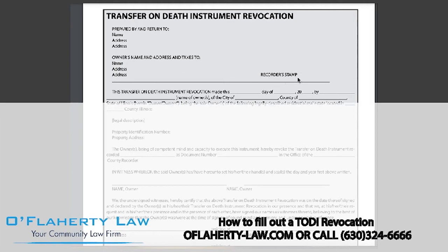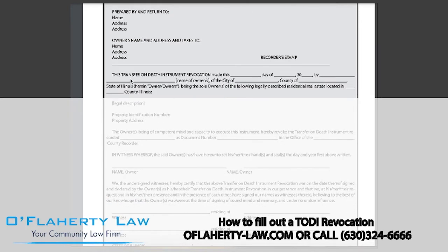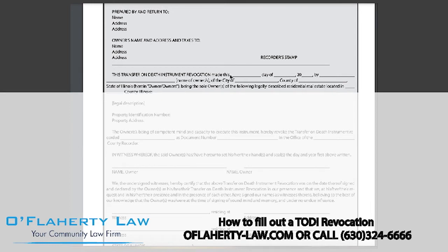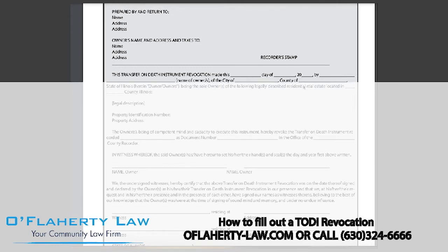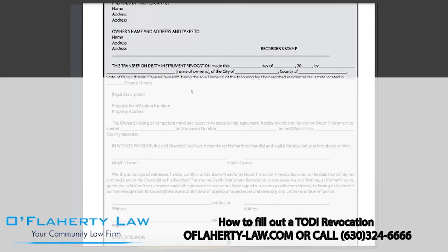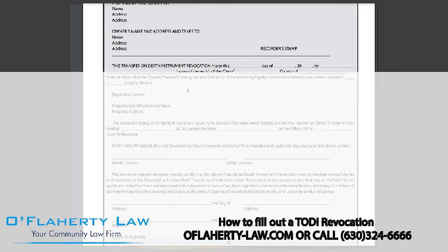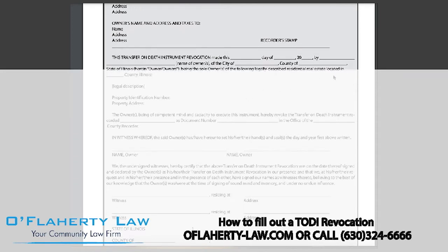The recorder will stamp here. This document will state that the transfer on death instrument revocation will be made on whatever date you are filing this revocation and by who, which should be the owner of the property, and which city and county of the state of Illinois that you are revoking it in. It should be wherever you recorded it in the first place, and then state which county the property is located in.